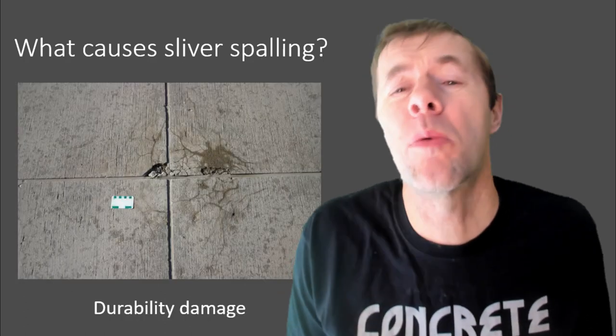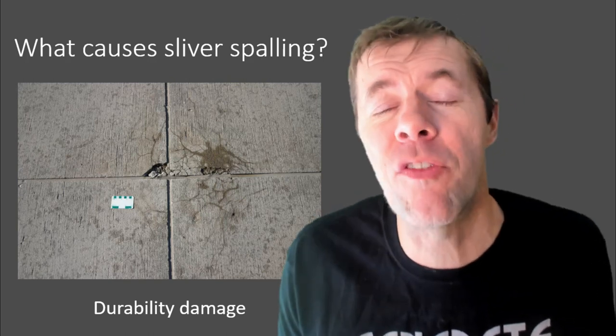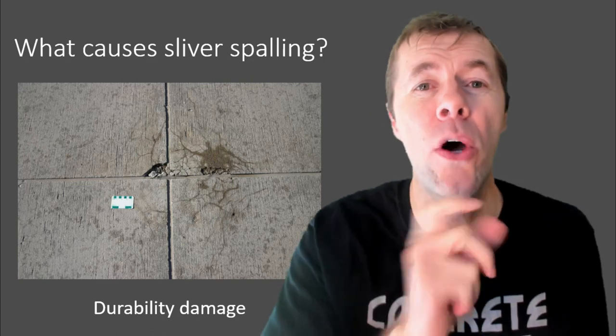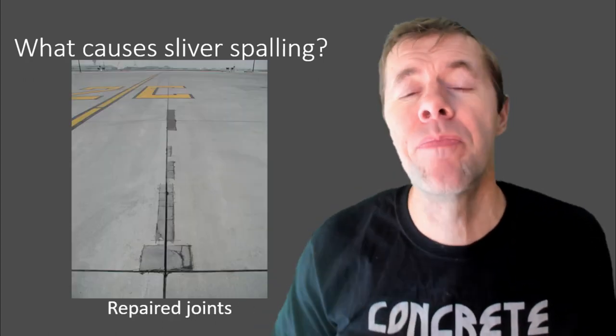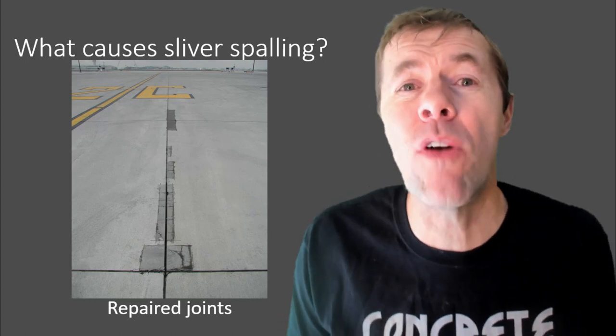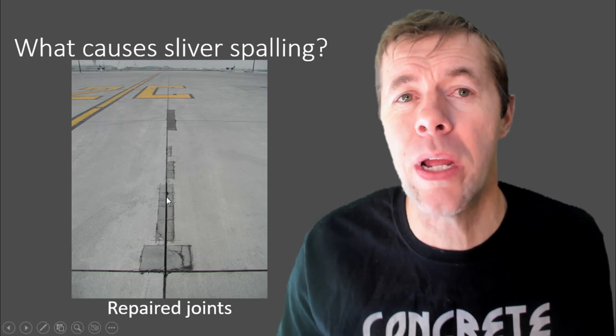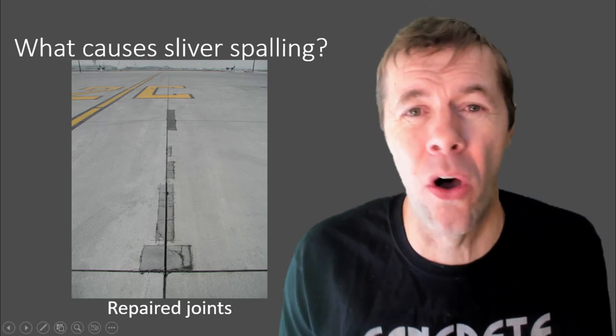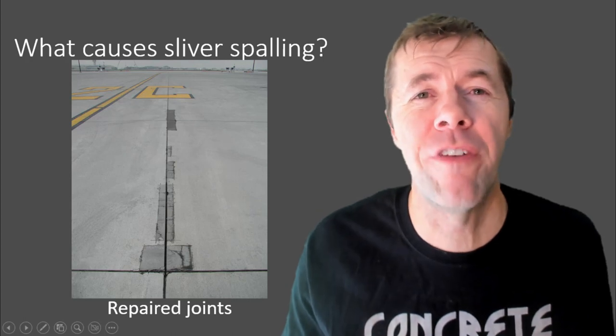It could be normal durability damage, maybe from D-cracking, maybe from freeze-thaw, maybe from alkali silica reaction that gets loaded again and again that causes these spalls to happen. It could be from someplace where they've already repaired a joint. They've come back in with this material and tried to fix a joint, and notice it just doesn't last as long. It's not as durable. It breaks up and causes more FOD damage.